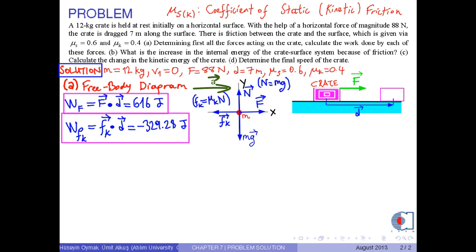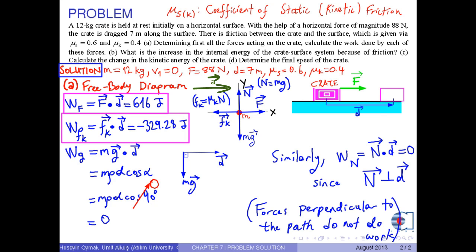The work done by the gravitational force is m times g dot D. The angle between the gravitational force and D is 90 degrees, so we obtain zero work. Similarly, the work done by the normal force is zero, because forces perpendicular to the path do not do work.